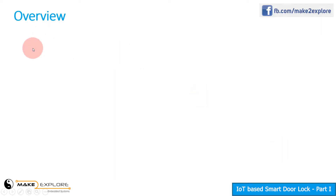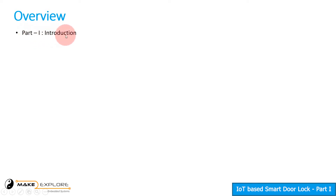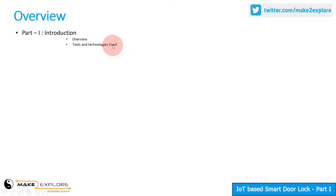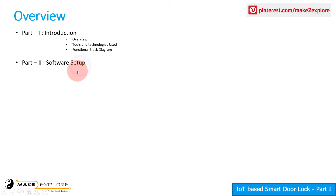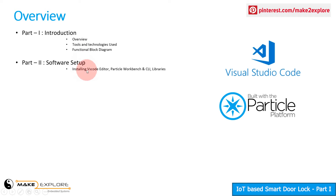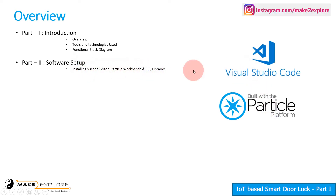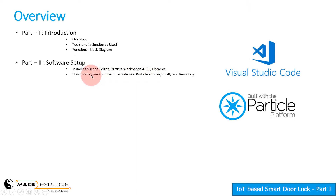We will cover this project in five parts. First, we will see a brief introduction — what tools and technologies will be used in the project — and a functional block diagram with working. In the second part, we will see software setup, which will include downloading and installation of VS Code Editor, Particle Workbench Extension, and Particle CLI. We will also see how to program and flash the code locally and remotely.